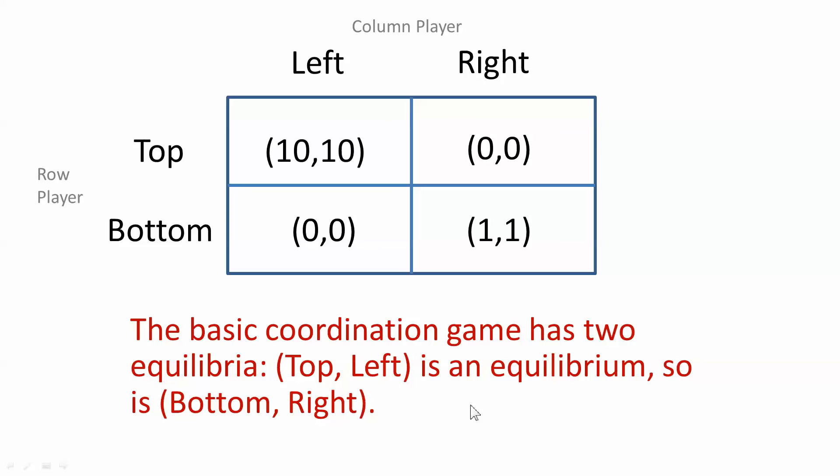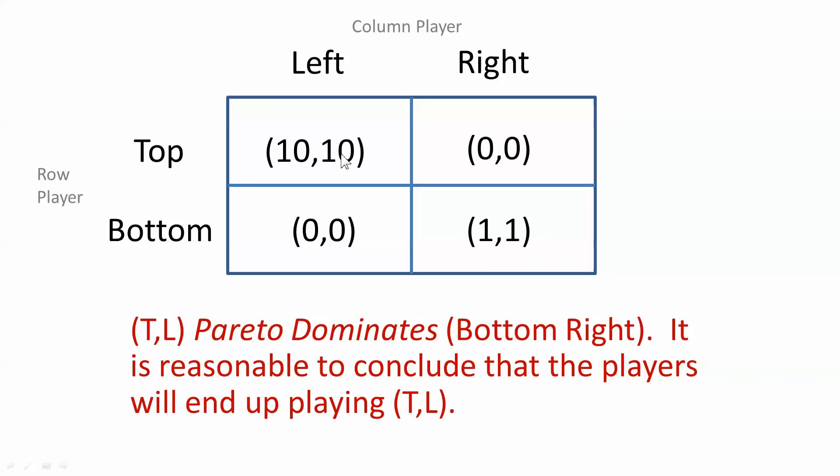Top left is clearly better than bottom right. Each player gets ten in top left. That's the highest payoff for the whole matrix. So top left Pareto dominates. It's better for each player. And in this setup, you can guess that the row player will guess the column player will play left, so it plays top. The column player will guess that the row player will play top, so it plays left. So you can guess in this setup top left will prevail.